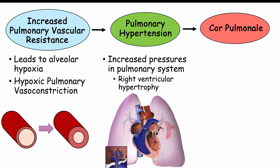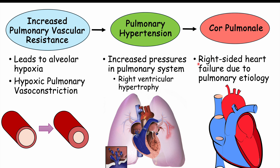Cor pulmonale is specifically isolated right-sided heart failure due to a pulmonary etiology. Because of increased pulmonary blood pressure — pulmonary hypertension — the right ventricle has to pump harder and harder, the musculature becomes bigger and bigger, and eventually the right ventricle fails, leading to right-sided heart failure caused by that pulmonary cause. Cor pulmonale is isolated right-sided failure, without left-sided heart failure.